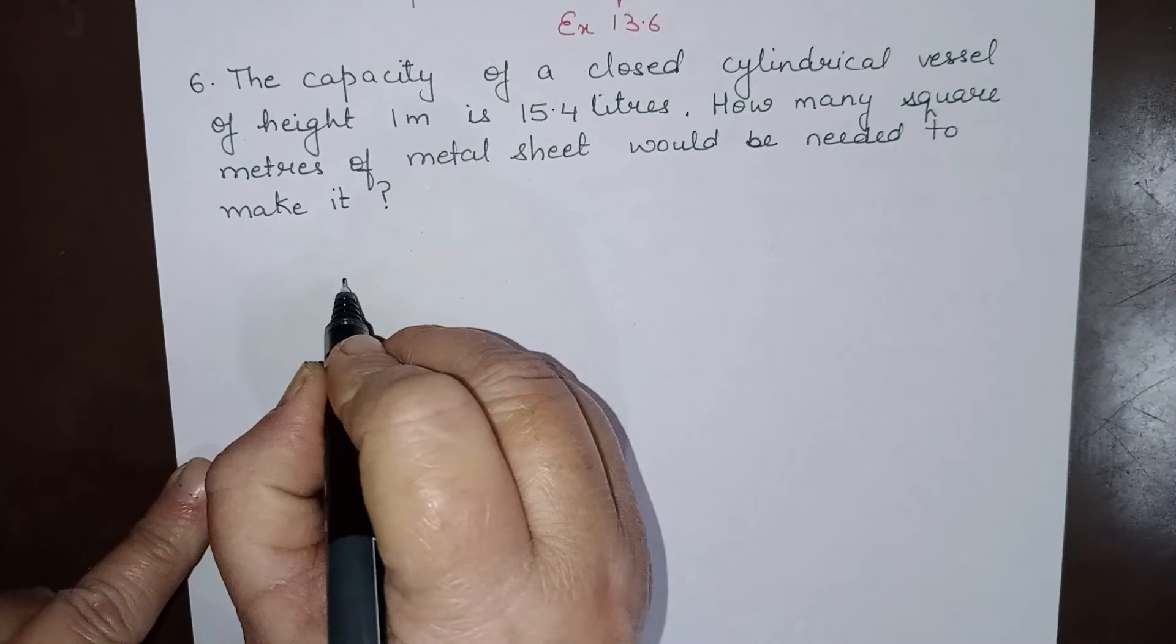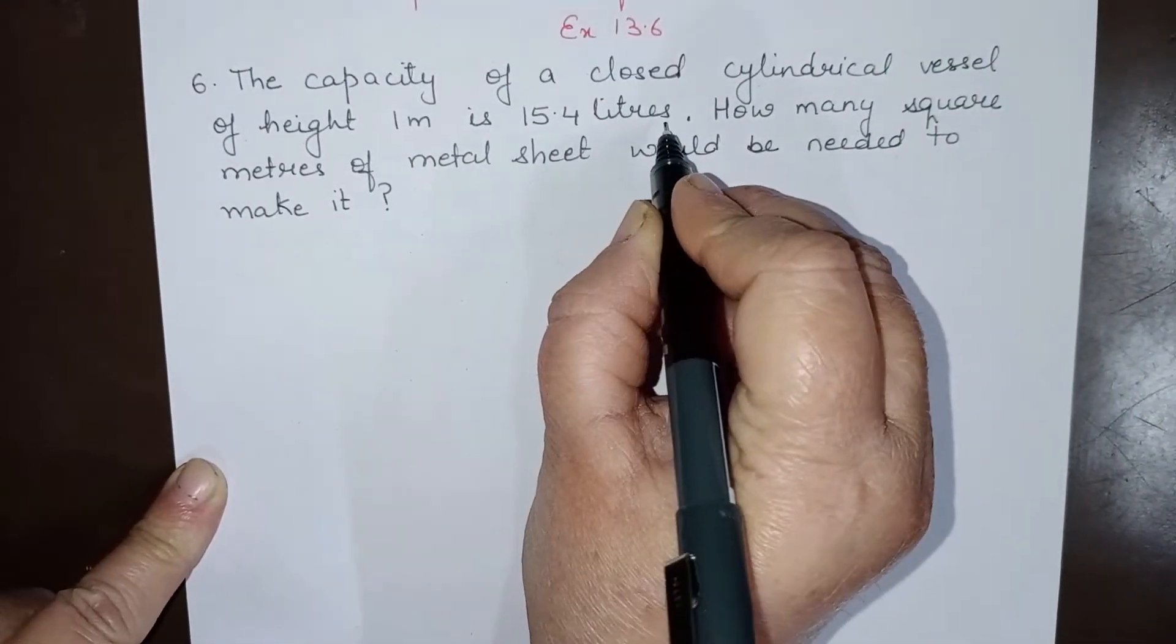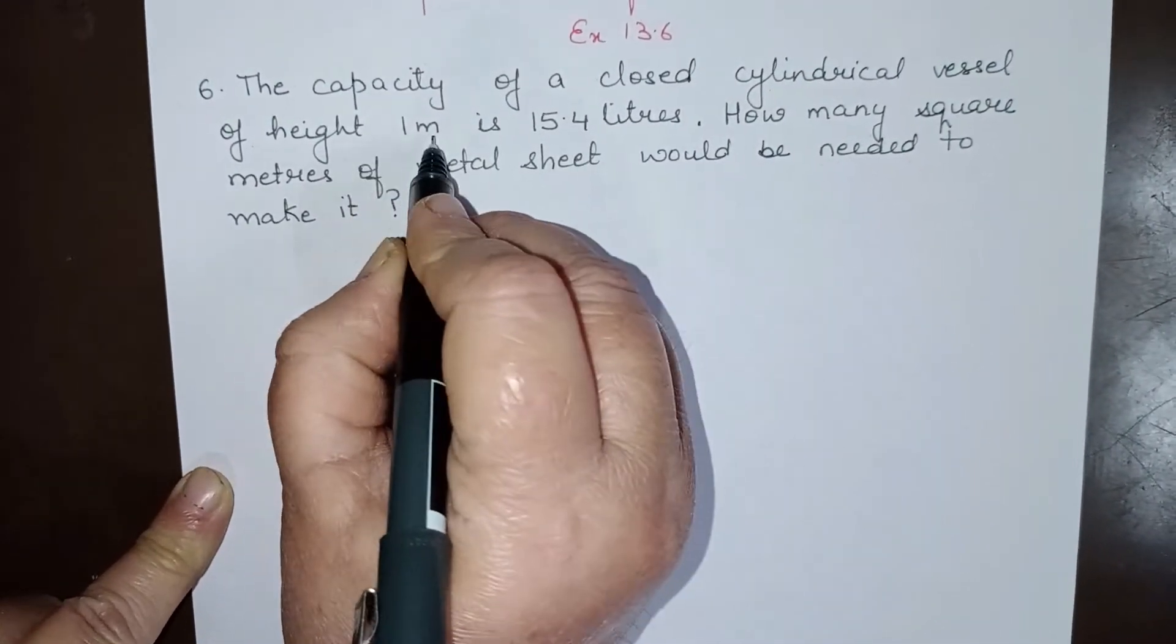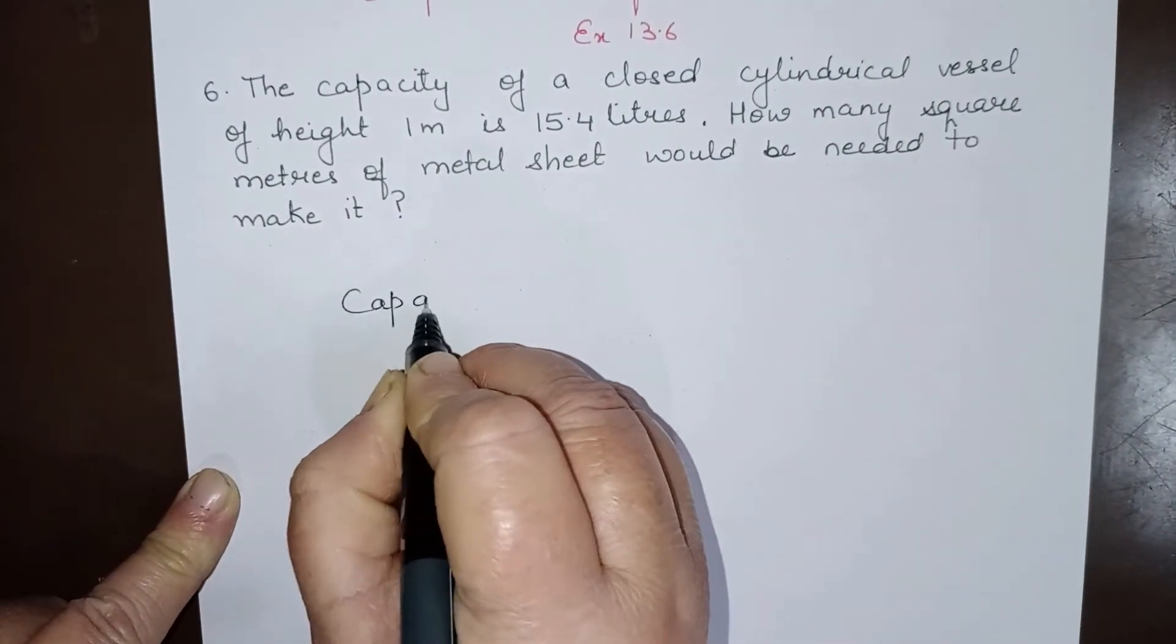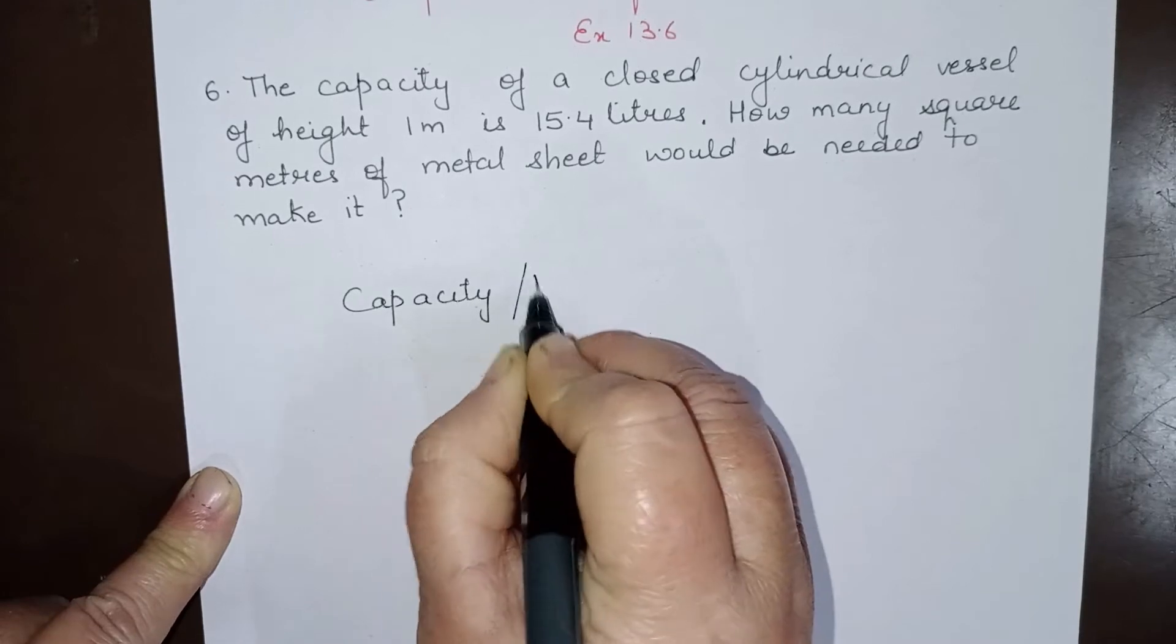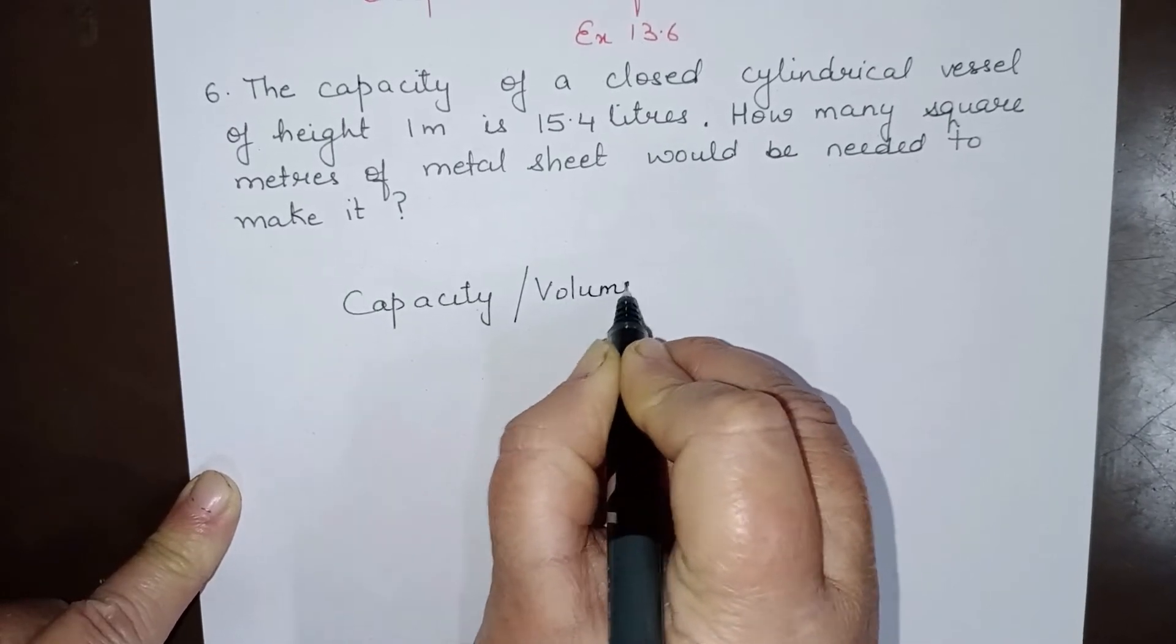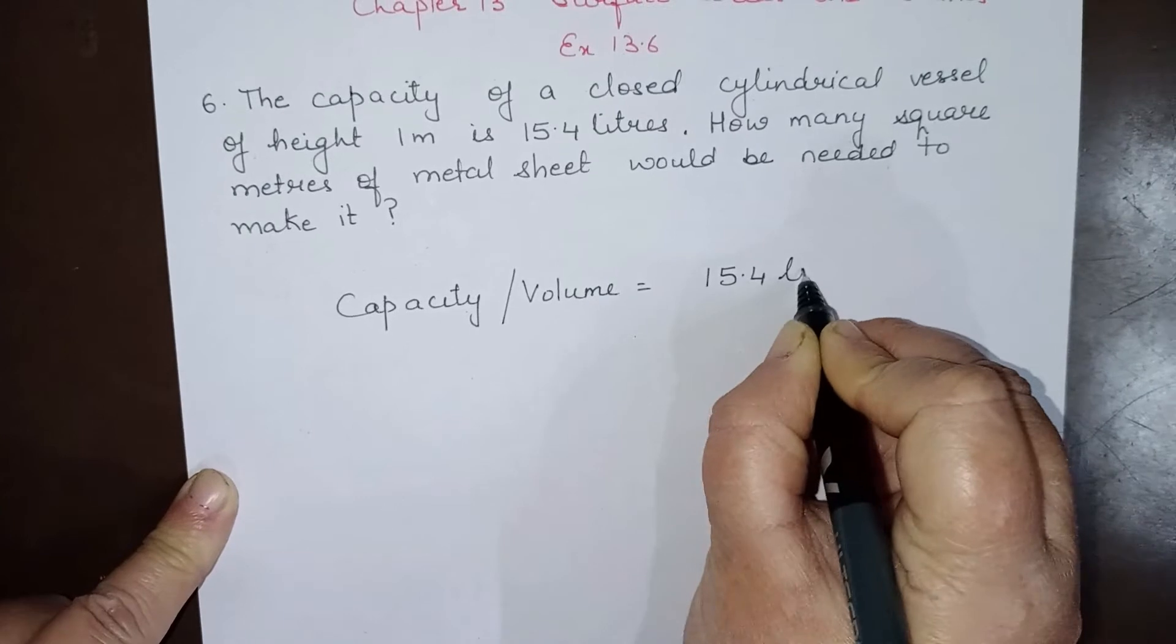First of all, capacity is given in liters. Let us convert this to cubic meters because height is given in meters. So capacity, or we can say volume, is given as 15.4 liters.